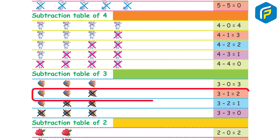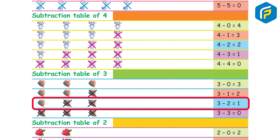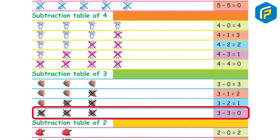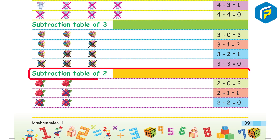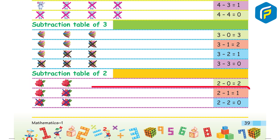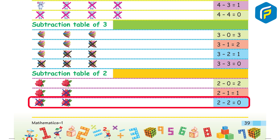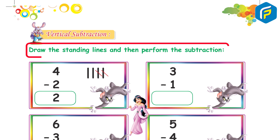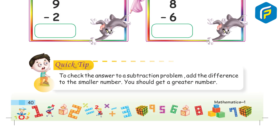Subtraction table of 3: 3 minus 0 is equal to 3. 3 minus 1 is equal to 2. 3 minus 2 is equal to 1. 3 minus 3 is equal to 0. Subtraction table of 2: 2 minus 0 is equal to 2. 2 minus 1 is equal to 1. 2 minus 2 is equal to 0. Vertical subtraction: draw the standing lines and then perform the subtraction.